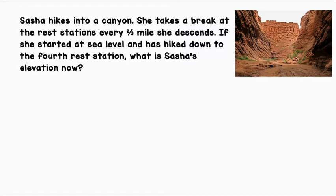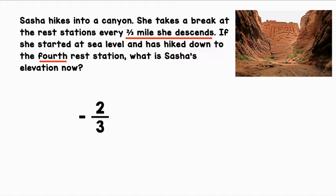Sasha hikes into a canyon. She takes a break at rest stations every 2/3 of a mile she descends. If she started at sea level and has hiked down to the 4th rest station, what is Sasha's elevation now? There's a rest station every 2/3 of a mile. Since she is descending, we can represent that with negative 2/3. She has done this 4 times because she's at the 4th rest station, so let's multiply by 4. We have one fraction and one whole number, so let's convert the whole number to a fraction by putting it over 1.